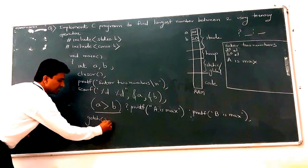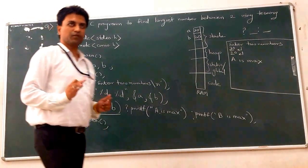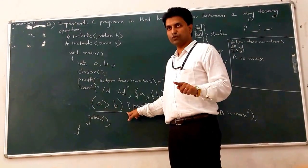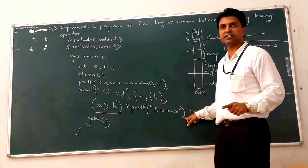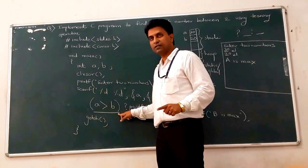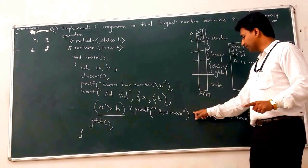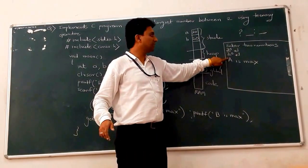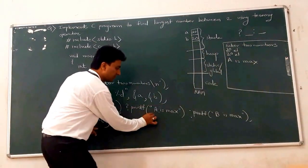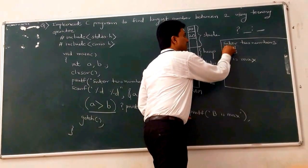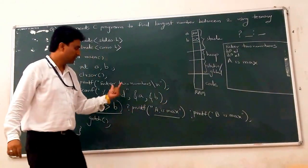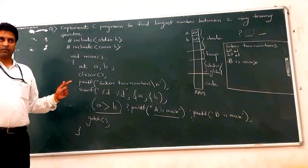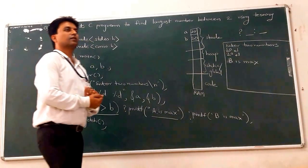This is the working principle of the ternary operator: if the condition's truth value is true, the first statement — printf A is max — is evaluated. If false, the second part after the colon — printf B is max — is evaluated. For example, if user enters 30 and 20, A is max is printed. If user enters 10 and 20, B is max is printed.